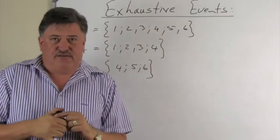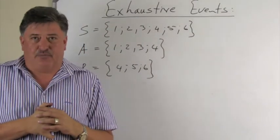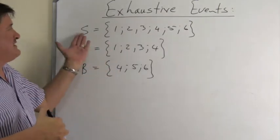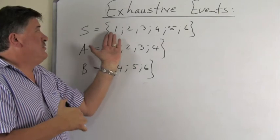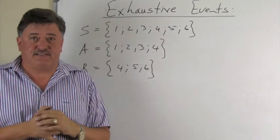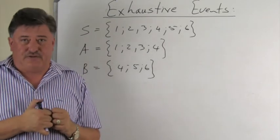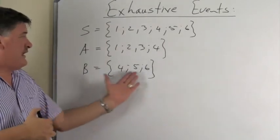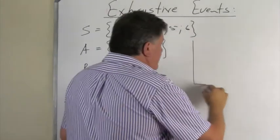Now in terms of probability, it means the two events used all the outcomes. I'm going to illustrate this for you by looking at an example. First of all, our sample space S equals the numbers 1, 2, 3, 4, 5, and 6. Event A are the outcomes 1, 2, 3, and 4. Event B are the outcomes 4, 5, and 6.